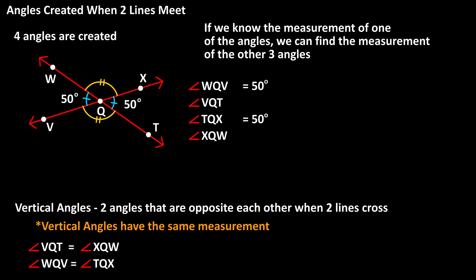We also know that a straight line is a straight angle that has a measurement of 180 degrees. So the line XQV, or angle XQV, is 180 degrees.